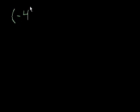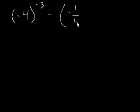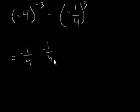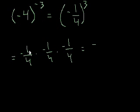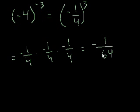Let's say I had negative 4 to the negative third power. Immediately, I like to get rid of the negative in the exponent, and I know that equals negative 1 over 4 to the third power. That equals negative 1 over 4 times negative 1 over 4 times negative 1 over 4. The negative times the negative is a positive, but then we're multiplying that times another negative, so we get a negative. 1 times 1 times 1 is 1, and 4 times 4 is 16 times 4 is 64. So it equals negative 1 sixty-fourth.